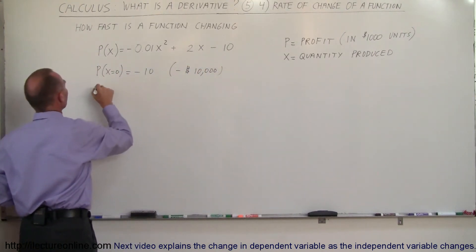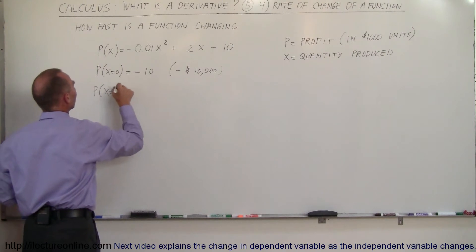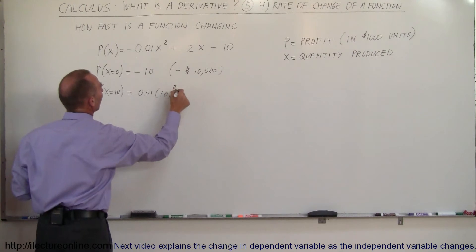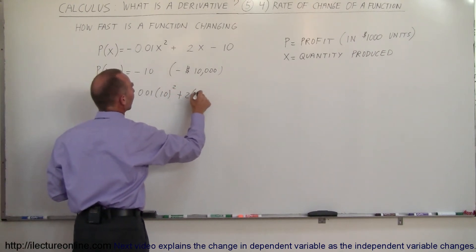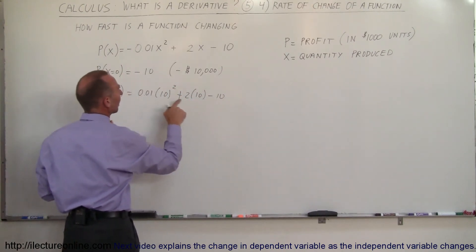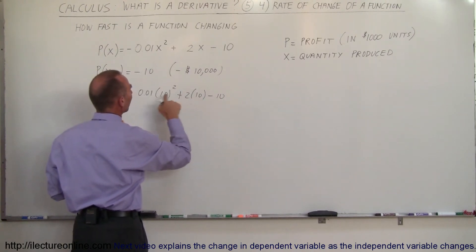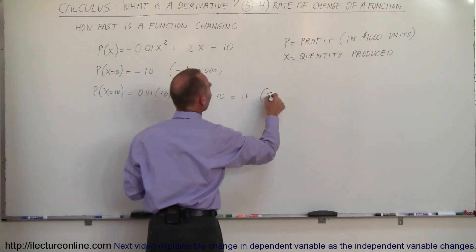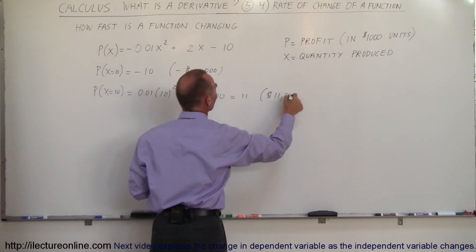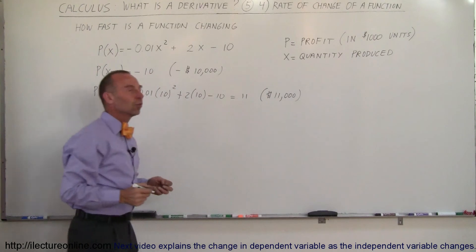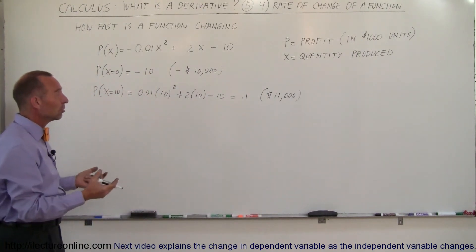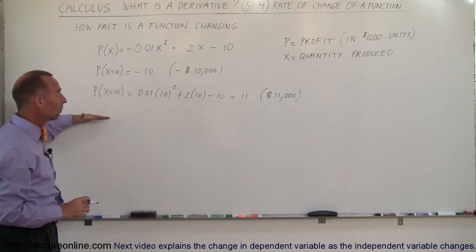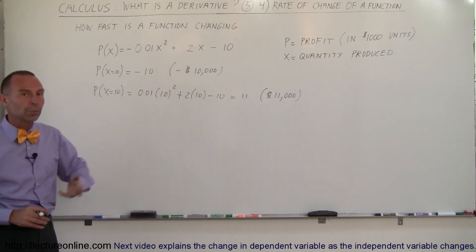But when x = 10, p(10) = -0.01 × 10² + 2 × 10 - 10, so that's 20 - 10 = 10, plus 1 gives 11 — in other words, a profit of eleven thousand dollars. And when x equals 20, 30, 40, you'll make more and more profit.